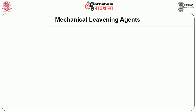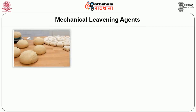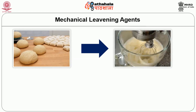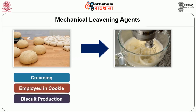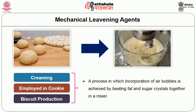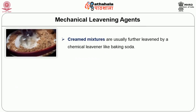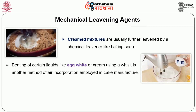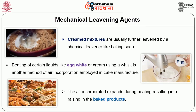Mechanical leavening can be achieved by integrating tiny air bubbles into the mixture using a mixer or whisk. Creaming, a process employed in cookies and biscuit production, involves incorporation of air bubbles by beating fat and sugar crystals together in a mixer. Creamed mixtures are usually further leavened by a chemical leavener like baking soda. Beating certain liquids like egg white or cream using a whisk is another method of air incorporation employed in cake manufacture. The air incorporated expands during heating, resulting in raising of the baked products.